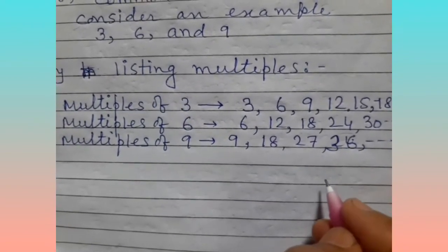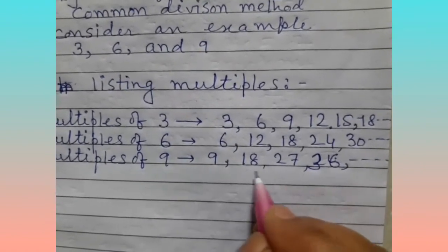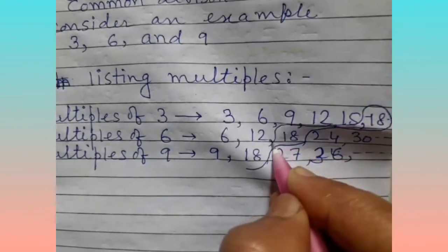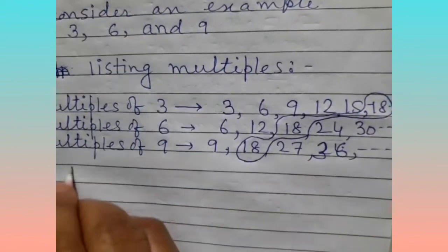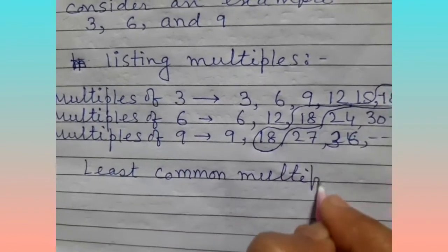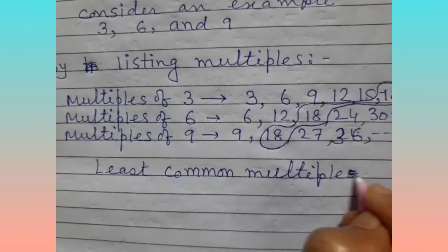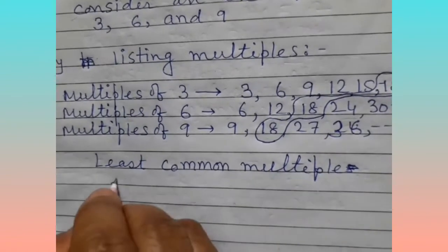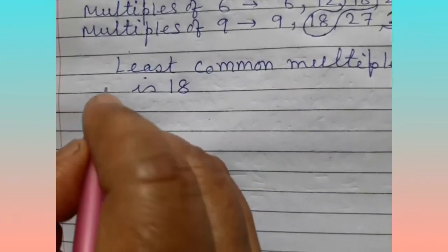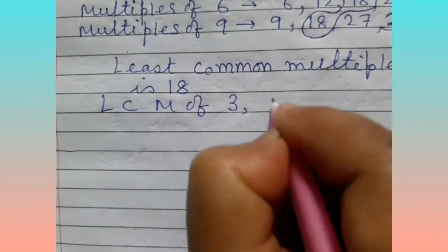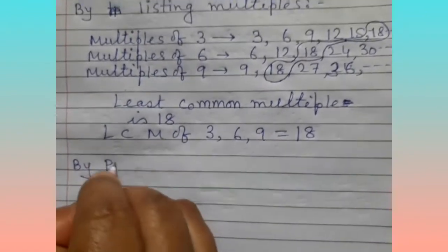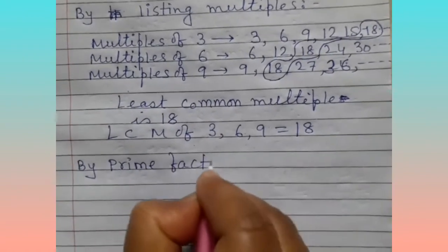Now you have to find the least common multiple of these three numbers. The least common multiple is 18. So the LCM of 3, 6, 9 is equal to 18.